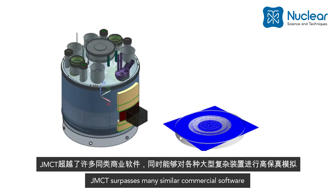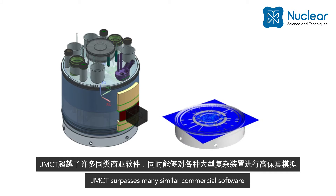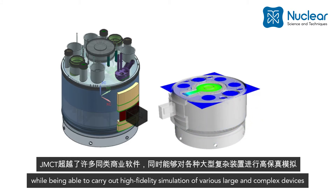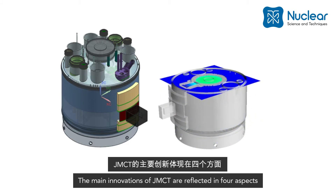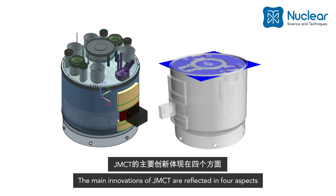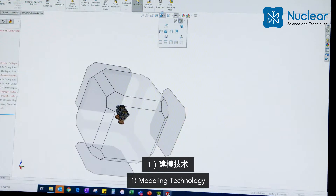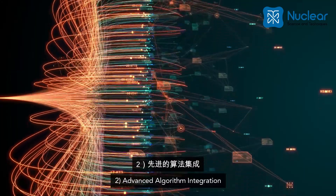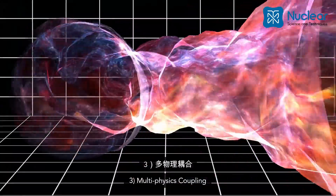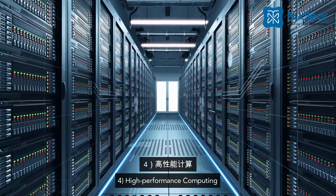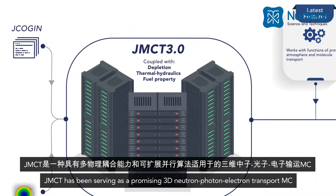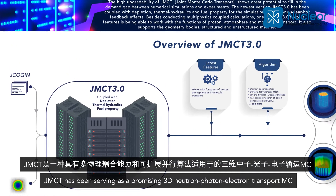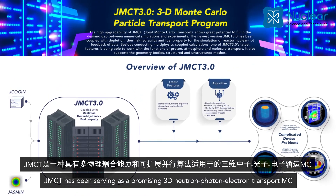JMCT surpasses many similar commercial software while being able to carry out high-fidelity simulation of various large and complex devices. The main innovations of JMCT are reflected in four aspects: one, modeling technology; two, advanced algorithm integration; three, multi-physics coupling; and four, high-performance computing.